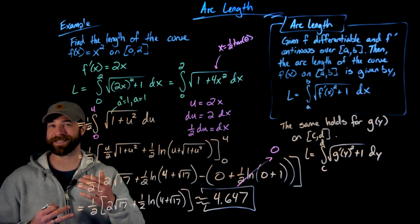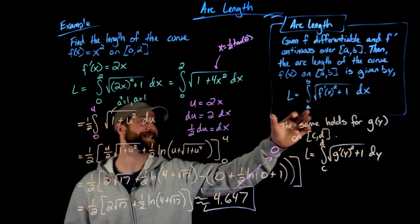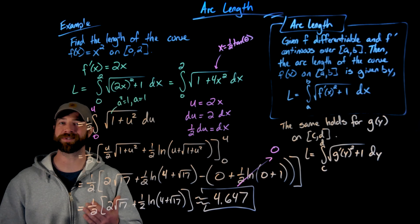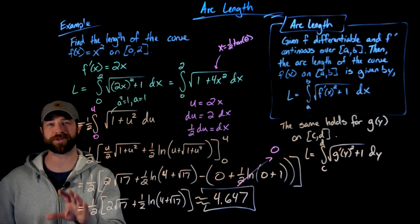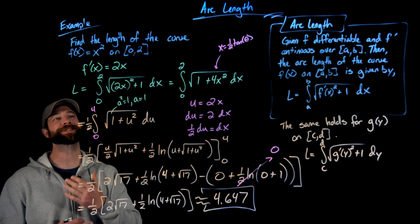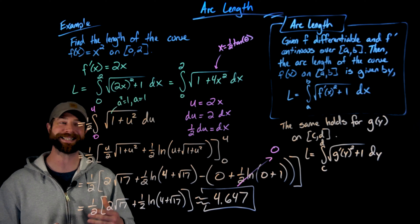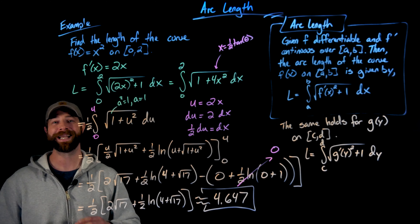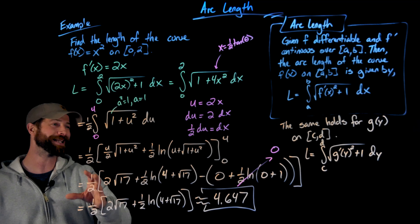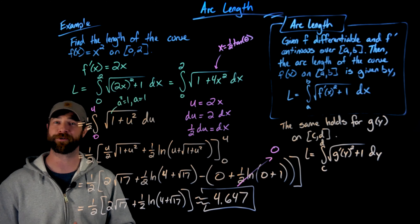Plugging that into a calculator, I get approximately 4.647 for the length of the curve f(x) = x² on the interval from 0 to 2. That's the entire coverage of this section. Generally, the most important thing is the formula for finding arc length. We don't do many examples because almost every interesting function is not easy to compute by hand — almost always you'll use some kind of numerical approximation, a table, or a computer algebra system.